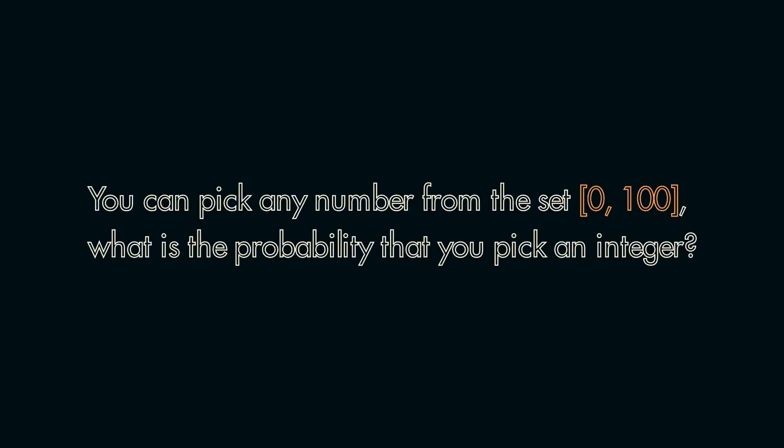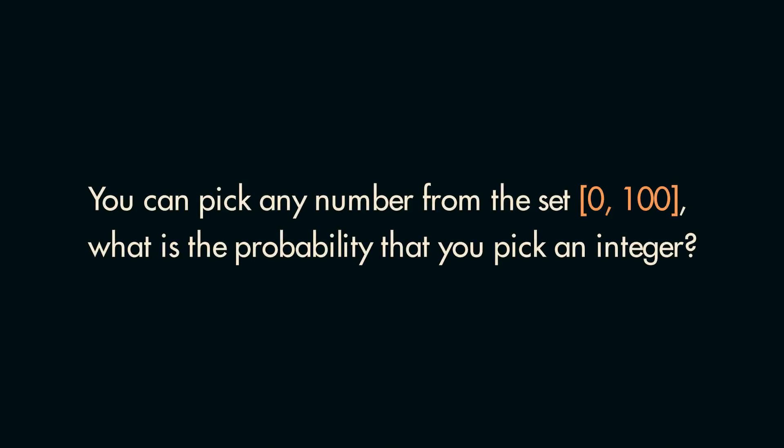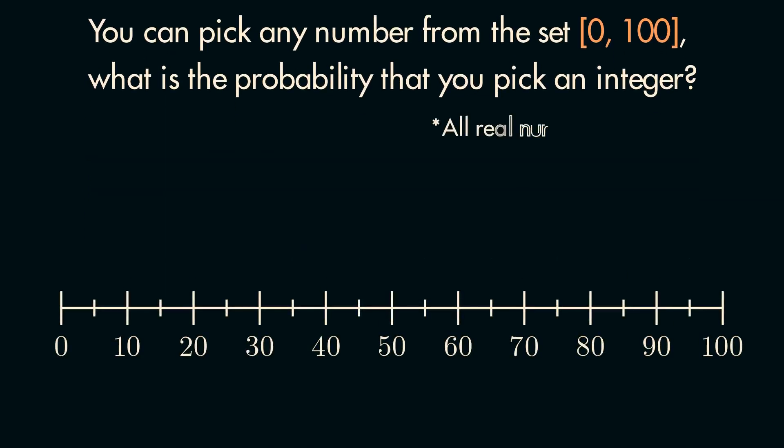Now we are starting to get into some graduate level measure theory, so to avoid that, let's imagine a scenario where you can pick any number from the set 0 to 100. What is the probability that you pick an integer? Mind you that all real numbers are allowed. Given that, the probability of picking an integer would actually be 0, because there are infinitely many more transcendental numbers comparatively, and likewise the probability of picking a transcendental number, like pi, would be equal to 1.